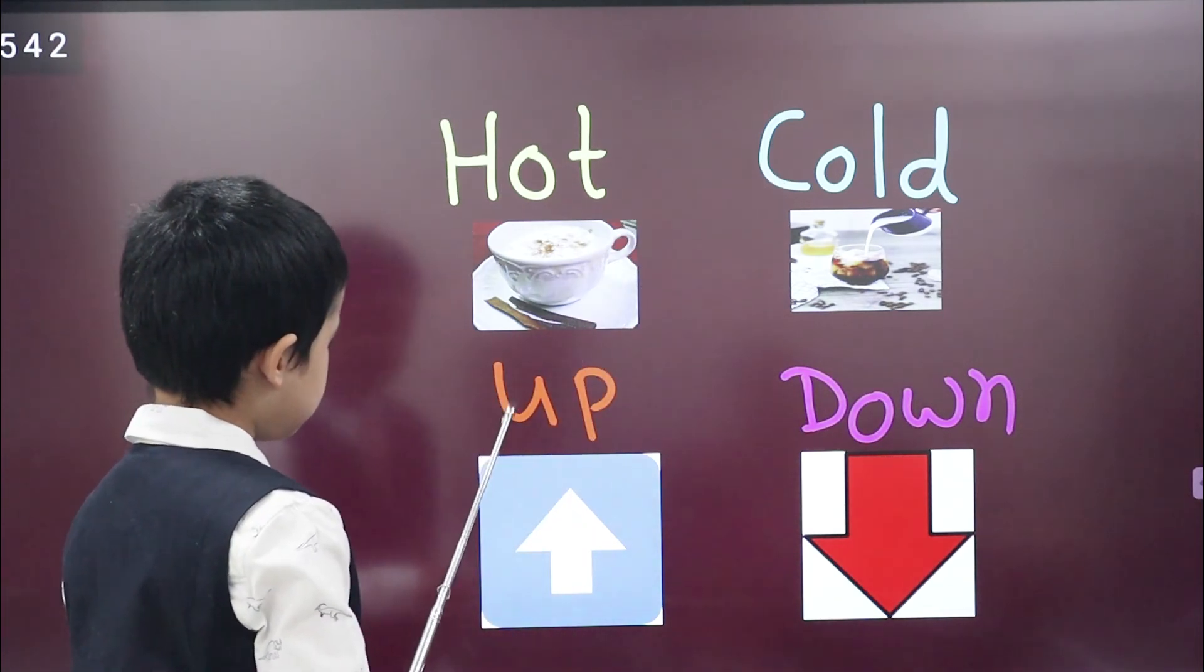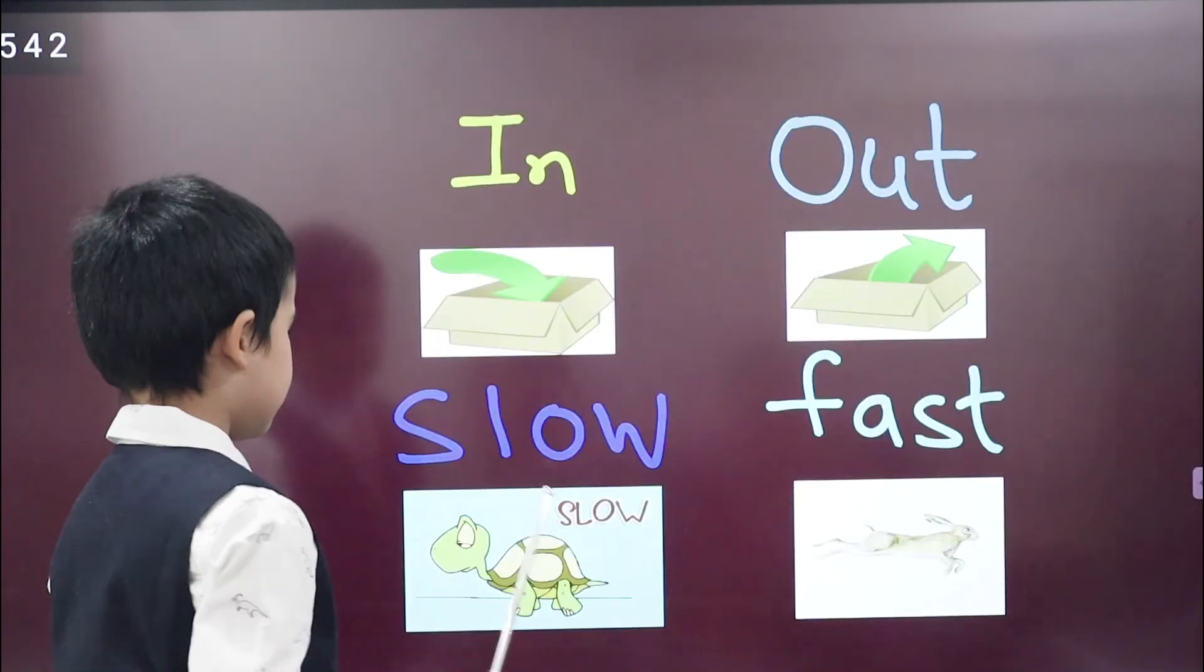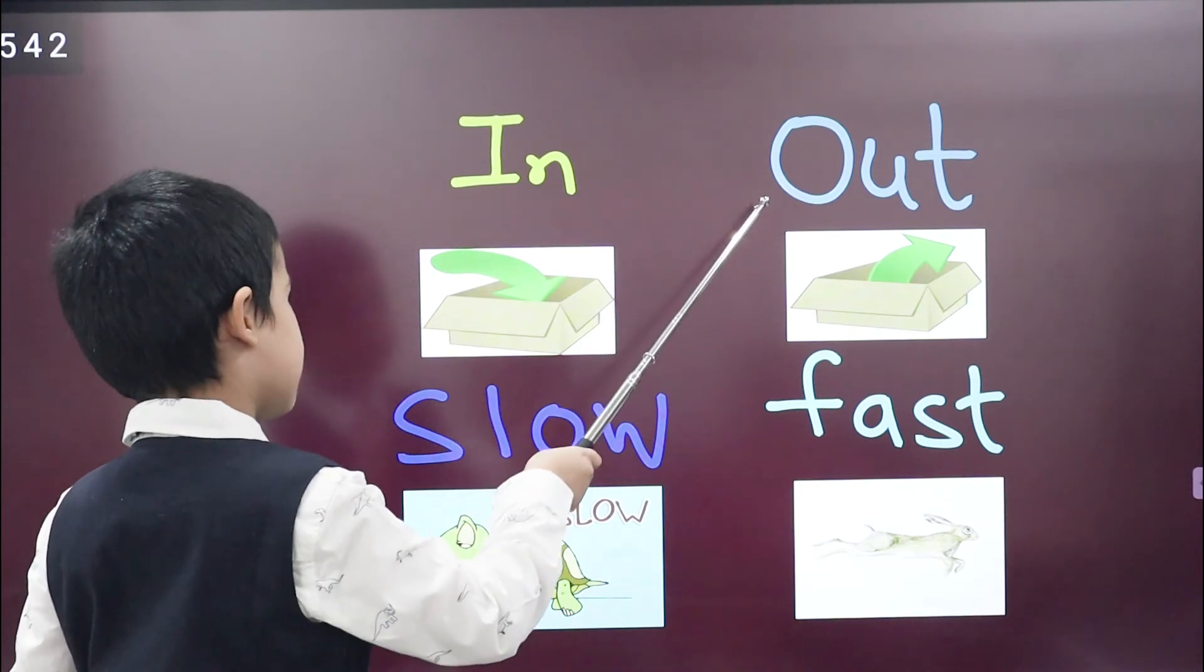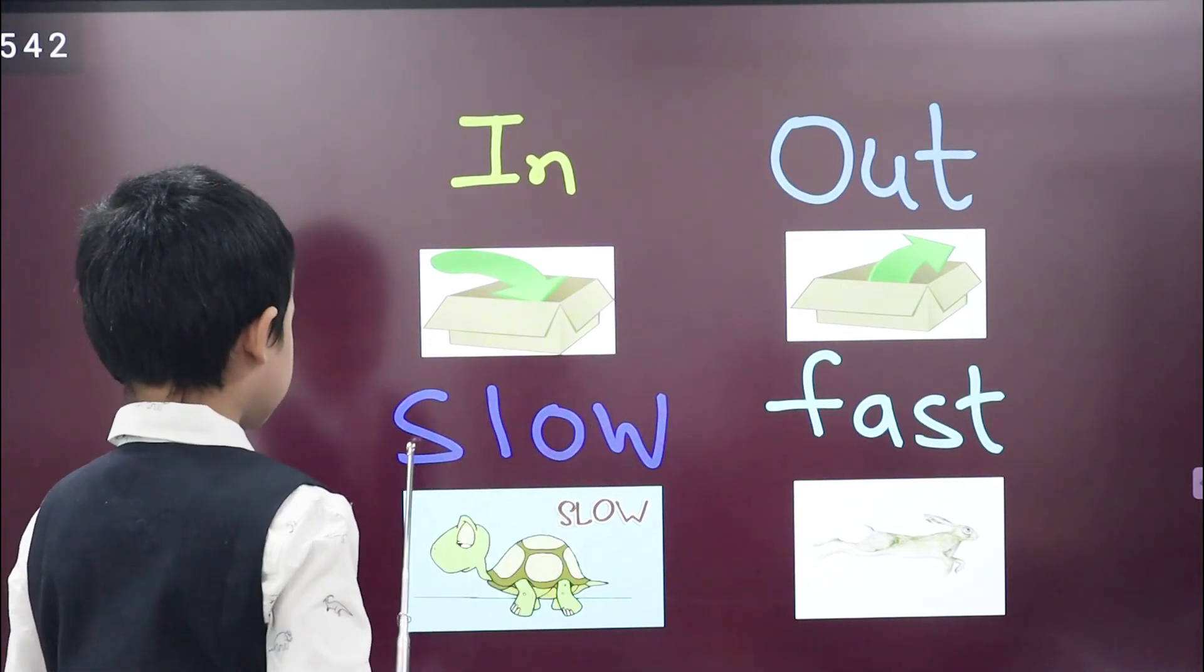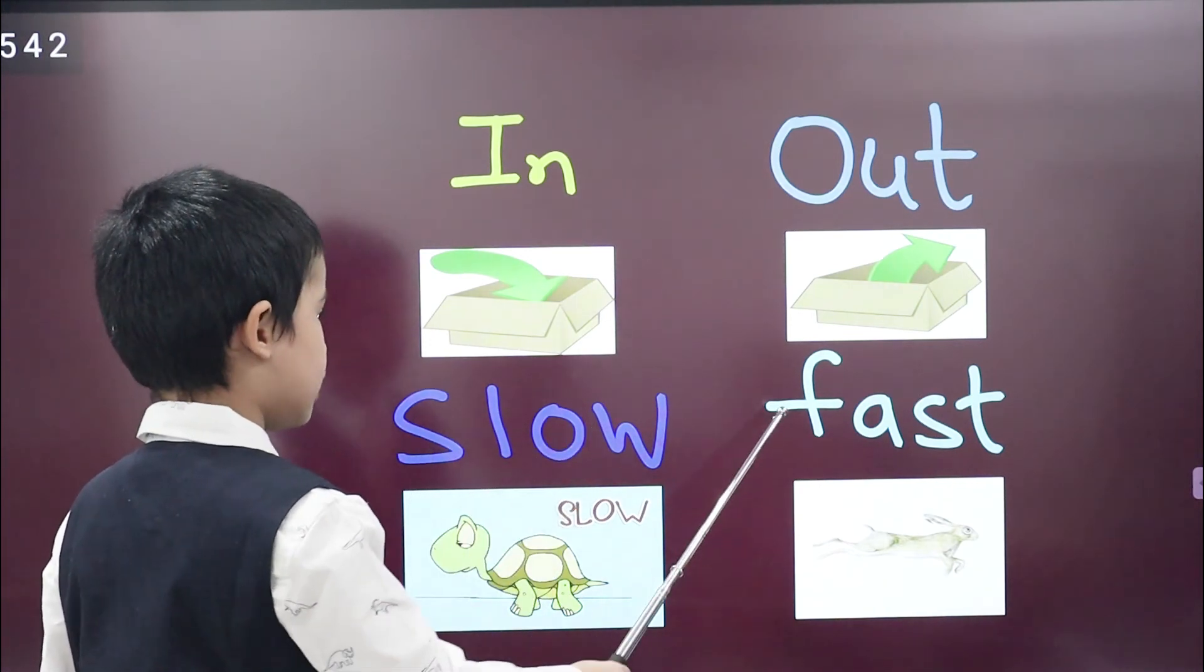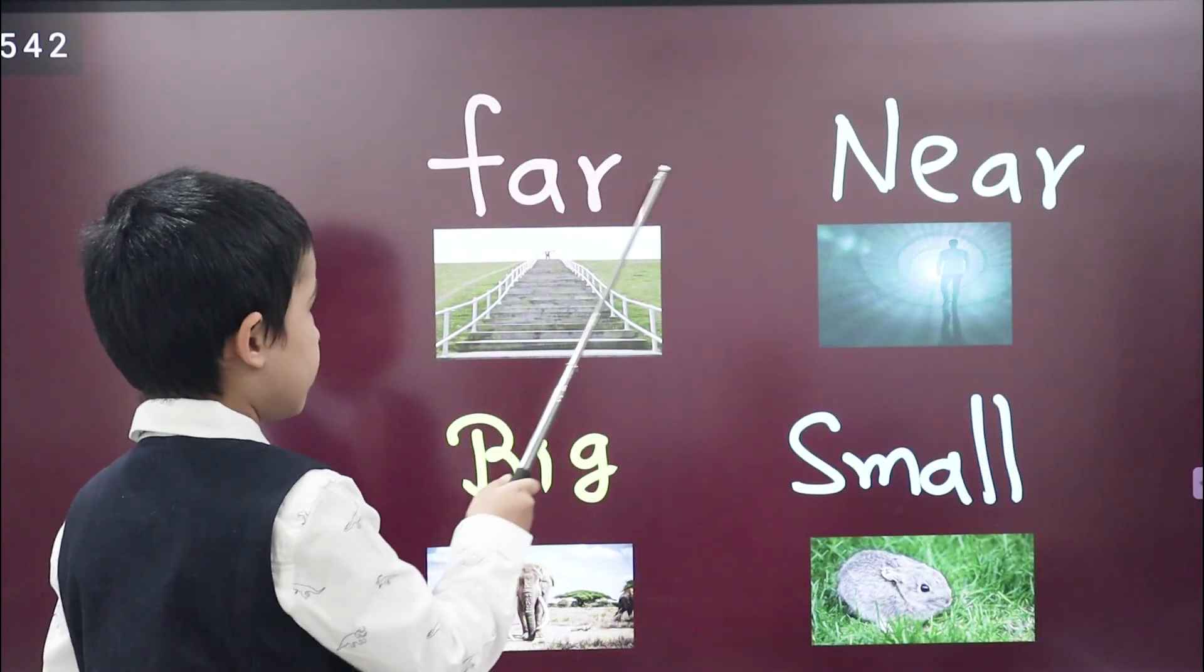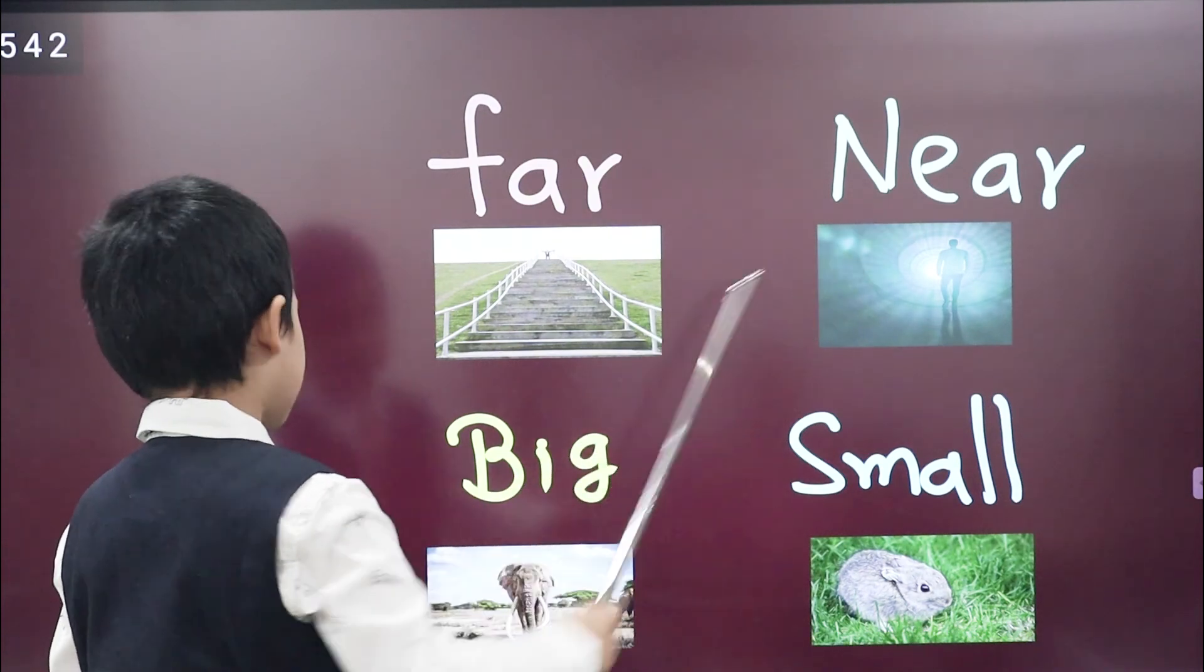What is the opposite of in? Out. Very good. What is the opposite of slow? Fast. Very good. What is the opposite of far? Near. Very good.